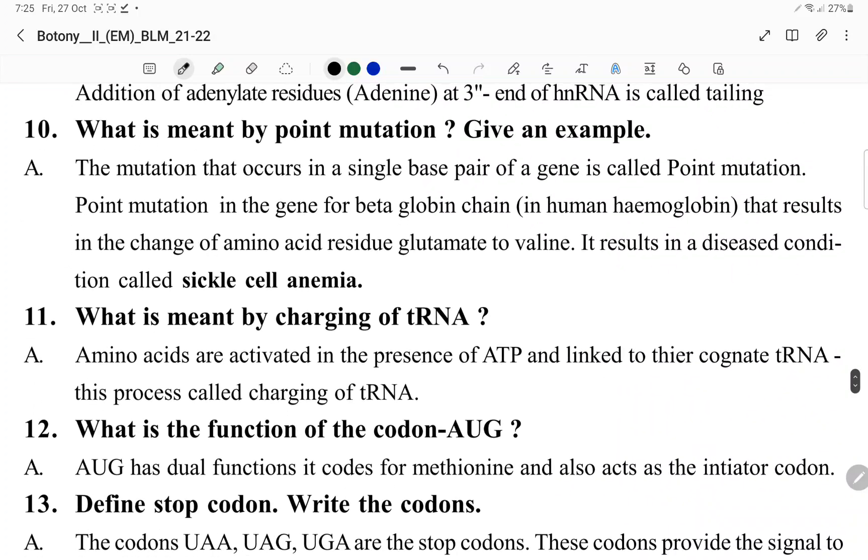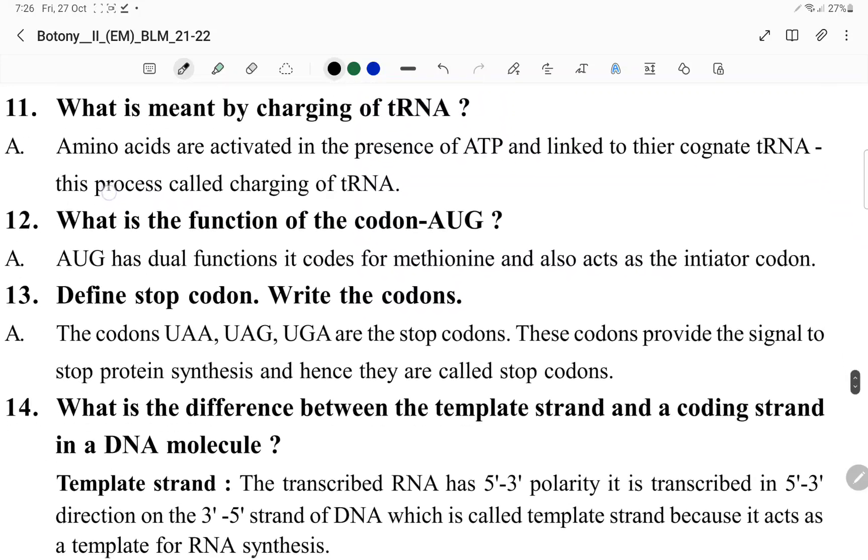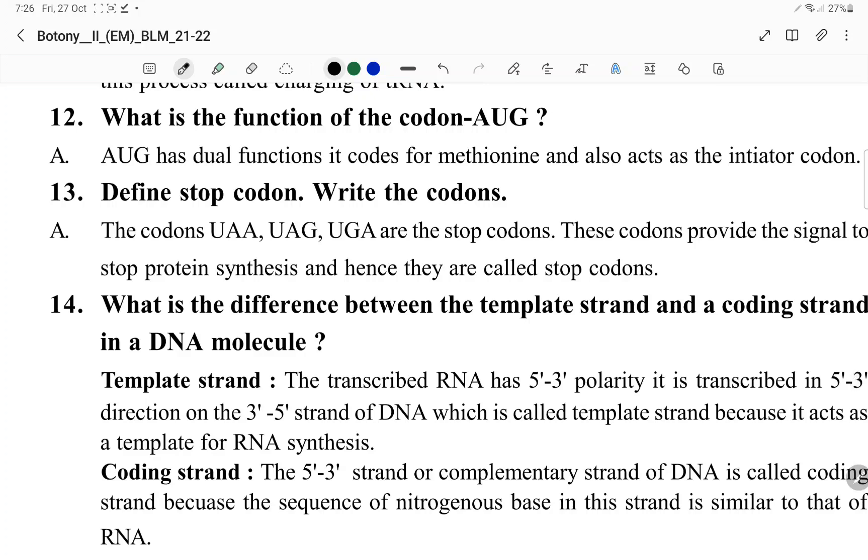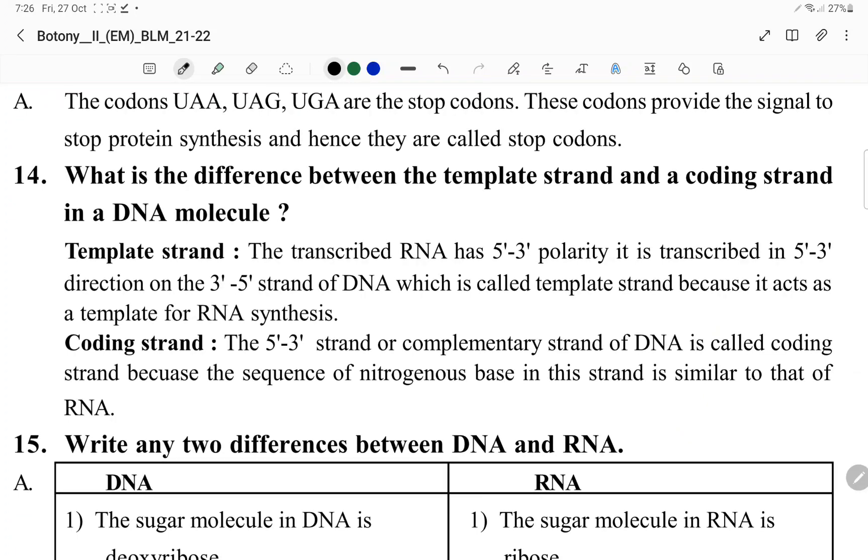Point mutation is when a single base pair changes. Point mutation in the beta-globin chain results in a change in amino acid, where glutamate changes to valine, causing sickle cell anemia. Charging of tRNA occurs in the presence of ATP, linked to the tRNA. AUG has a dual role: it's the initiator codon and codes for methionine. Stop codons are UAA, UAG, and UGA. These stop codons signal to stop protein synthesis and do not have tRNA.